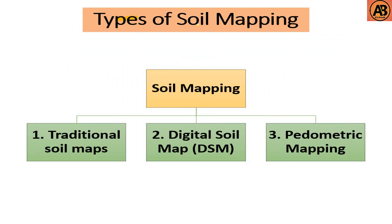There are three types of soil mapping. Number one is traditional soil maps, which typically show only the general distribution of soils, accompanied by soil survey reports. Number two is digital soil maps (DSM) — in the digital era, soil maps come in various digital vector and raster formats and are used for various applications in geosciences and environmental sciences.